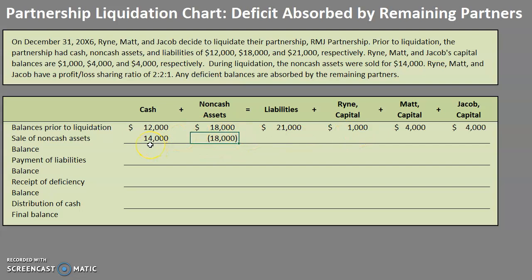Our next step is to determine if there was a gain or a loss. We had a book value of $18,000 for our non-cash assets and we just sold them for $14,000, so we have a loss situation. The left-hand side of the equation is currently negative $4,000, so we are dealing with a $4,000 loss that we are going to be distributing to Ryan, Matt, and Jacob.